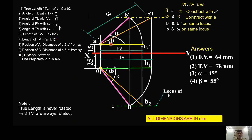These are the important points to remember from this problem. True length is A dash B1 dash and AB2. Angle of true length with HP is theta; angle of true length with VP is phi. Angle of front view with XY is alpha; angle of top view with XY is beta. Length of front view is A dash B2 dash; length of top view is AB1. Position of A is the distance of A and A dash from XY; position of B is the distance of B and B dash from XY. The distance between end projectors refers to A, A dash, B, B dash, while A dash B dash and AB are the final projections. All dimensions are in millimeters at full scale. This is the basic problem and solution under projection of a straight line inclined to both principal planes.